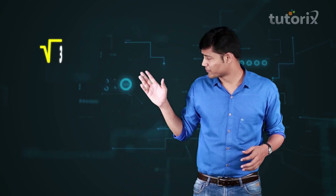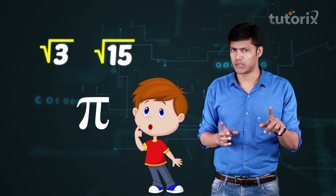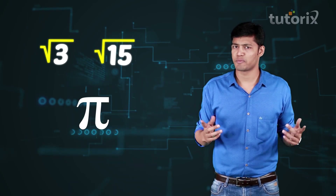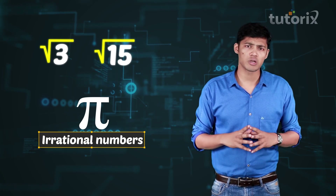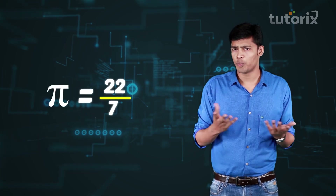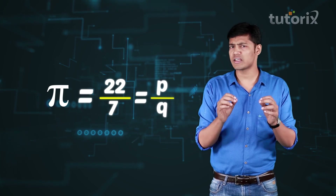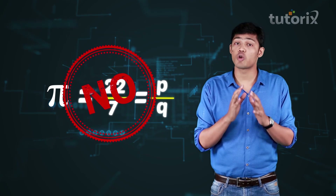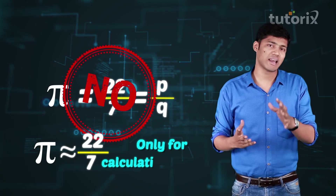Some other examples of irrational numbers are square root of three, square root of fifteen, and pi. Wait — is pi an irrational number? Yes, pi is an irrational number. But if we often use pi equal to 22 by 7, which is in p by q form, then pi must be a rational number, right? No — the value of pi is not exactly equal to 22 by 7. We just use it for calculation purposes.